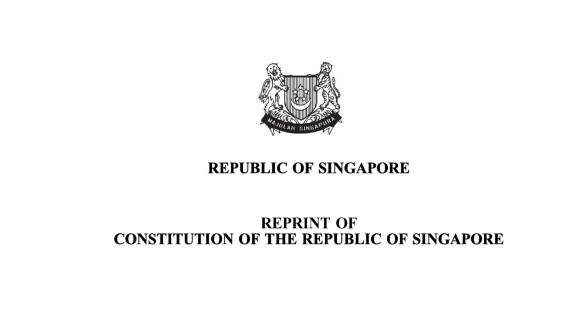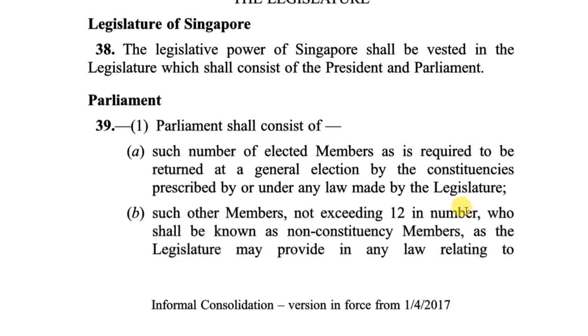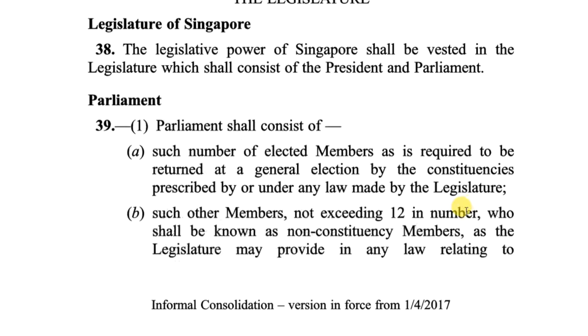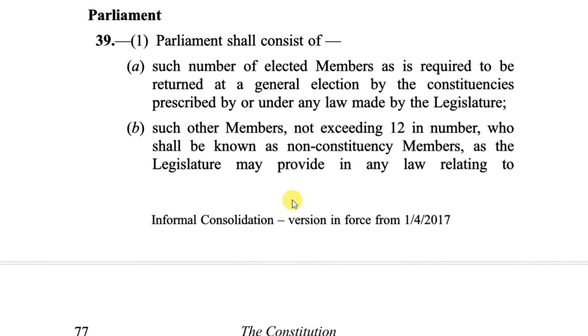It's worth repeating from our last two videos: the existence of the legislature is constitutional-level significant in Singapore. It should be unsurprising then that the people in the legislature, or the composition of parliament, is also constitutional-level significant. And that's exactly what it is. Article 39 comprehensively lists out the composition of parliament.